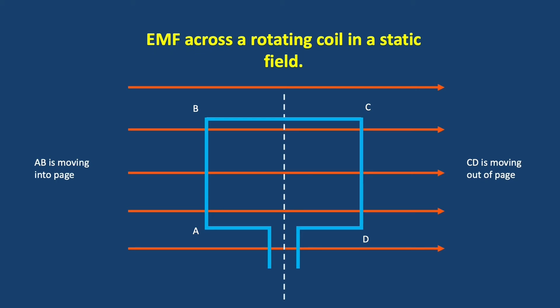As the coil rotates in this particular configuration, at this point in its rotation, we'll have the maximum EMF being generated, because AB is moving perpendicular to the field lines, and CD is moving perpendicular to the field lines.